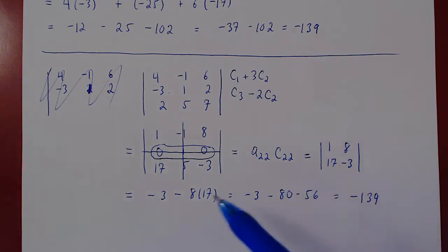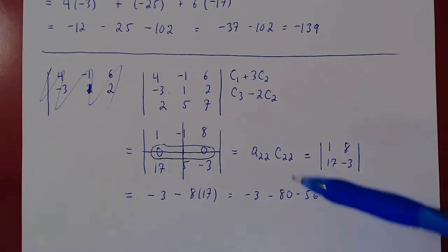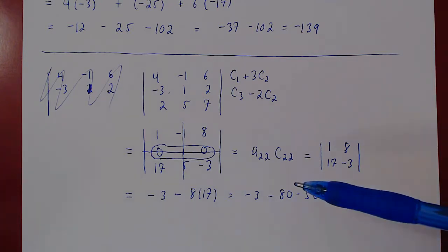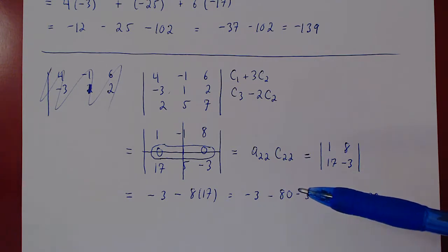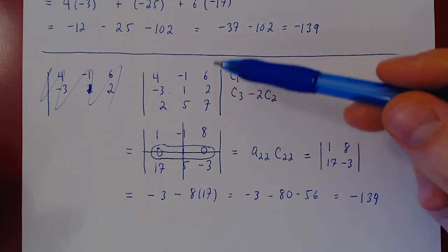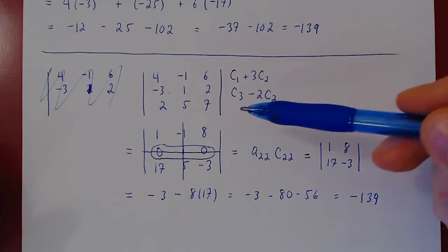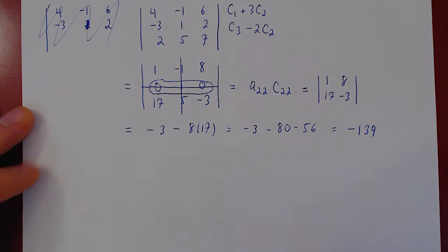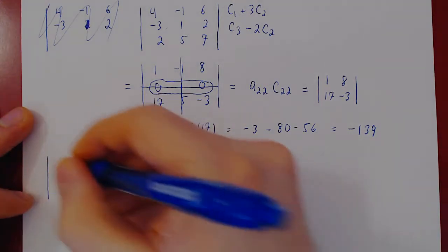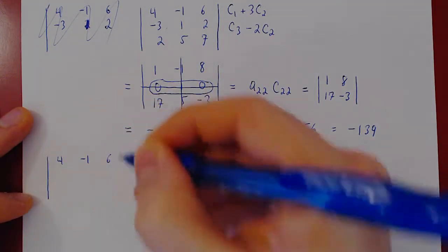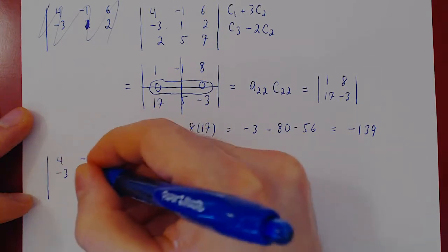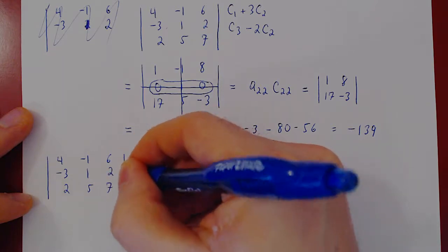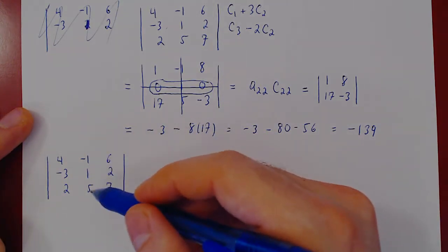Never use cofactor expansion unless you have constructed a row or a column where every entry is zero except for possibly one entry. Let's now do it again using row operations instead. Starting with the same matrix 4, negative 1, 6; negative 3, 1, 2; 2, 5, 7, let's use this negative 1 in column 2 to kill the entries below it.